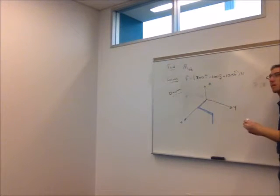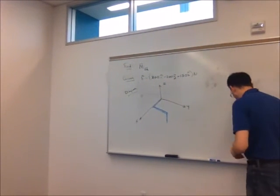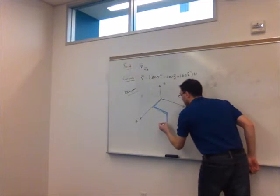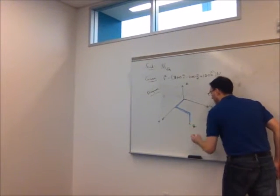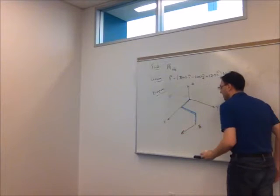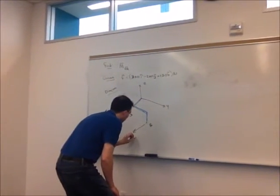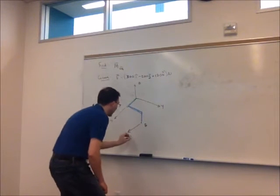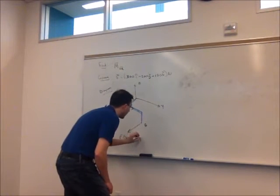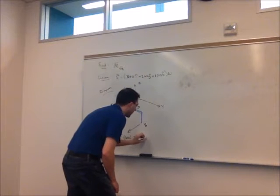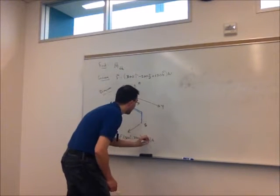And at that point B is where our force is acting. So I'll rewrite it here. 300i minus 200j plus 150k newtons.